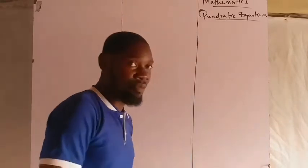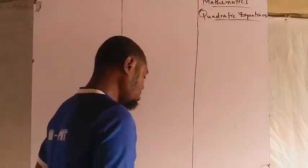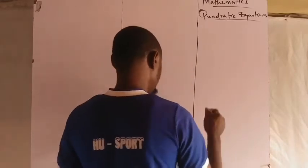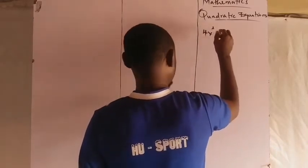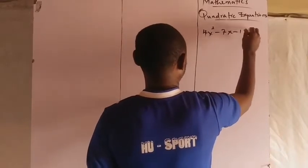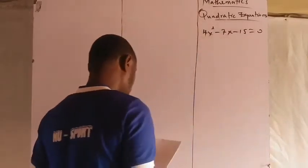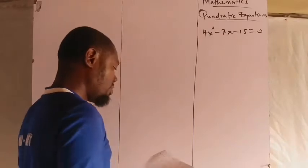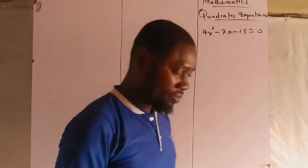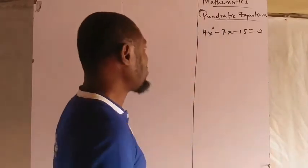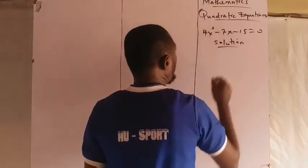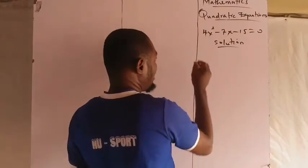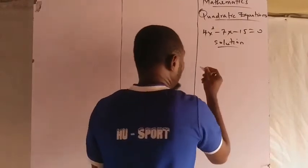Let us solve the problem given to us in the previous class. I have to solve 4x² + 7x - 15 = 0. Let us solve that using the factorization method. Solution: the steps involved, step 1 multiply the first and the last term.